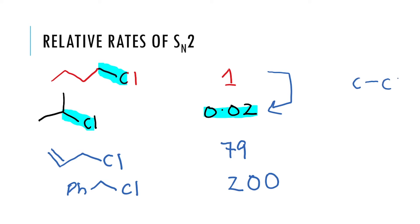When the carbon-chlorine bond is being broken, iodide attacks at 180 degrees, and anything that prevents or slows down the attack is going to slow down the reaction. If you have additional groups present, this creates a barrier for the attack to happen. Therefore, the transition state energy is going to be achieved at a higher energy and the reaction rate is going to be slow. This is fairly straightforward to understand.